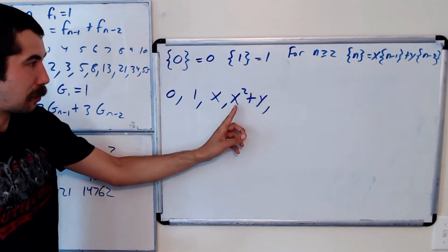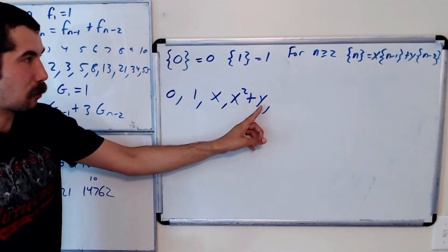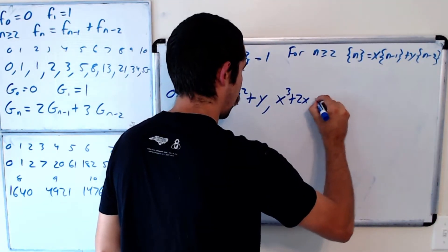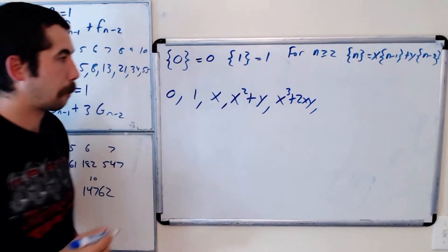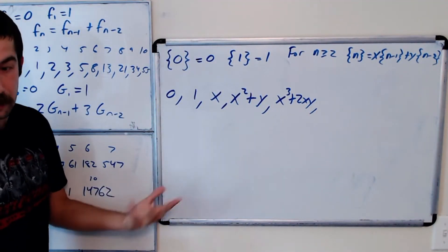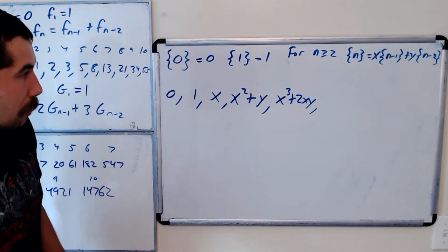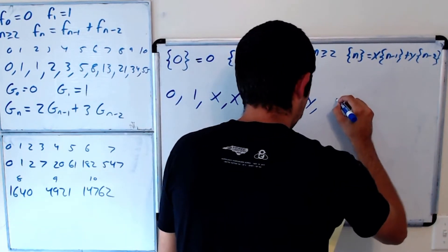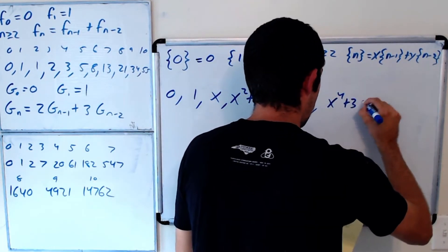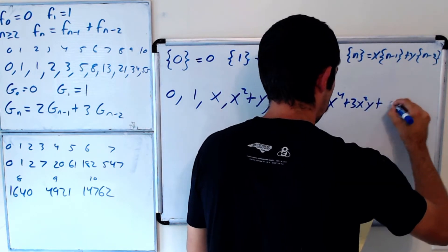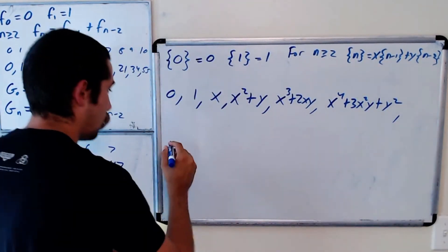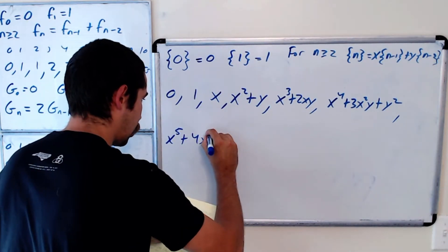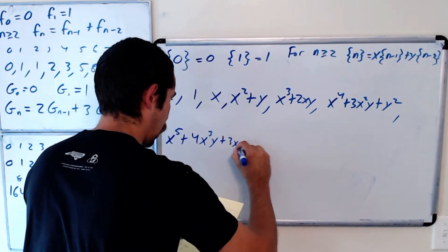For {4}: x times (x squared + y) plus y times x, which gives x cubed plus xy plus xy, so x cubed plus 2xy. You should work these out on your own, but here are the next few: {5} = x⁴ + 3x²y + y², and {6} = x⁵ + 4x³y + 3xy².